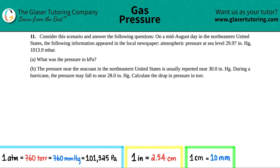Number 11 — consider this scenario and answer the following questions. On a mid-August day in the northeastern United States, the following information appeared in the local newspaper: atmospheric pressure at sea level — 29.97 inches of mercury, 1013.9 millibar. Letter A: